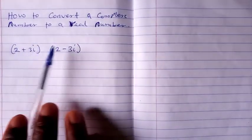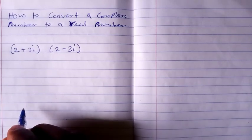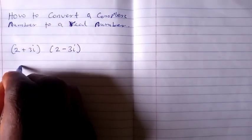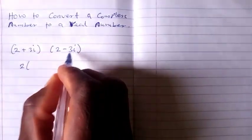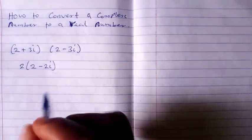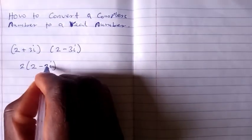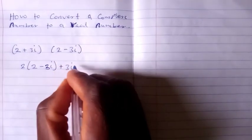Now if we multiply the two together, the result is going to be a real number. So we have (2 plus 3i) times the conjugate (2 minus 3i).